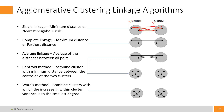The next one is called complete linkage, which is also called maximum distance or farthest distance. In complete linkage, once again you compute distance between each object of cluster one with each object of cluster two, but instead of taking the minimum of all distances, you take the maximum. Once again, the same concern applies — this is also going to be impacted by outliers.